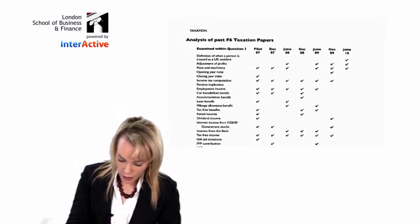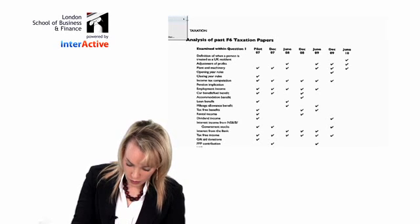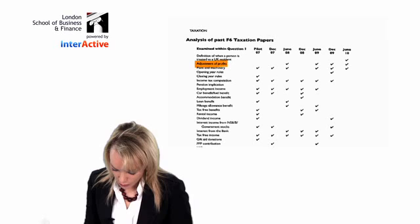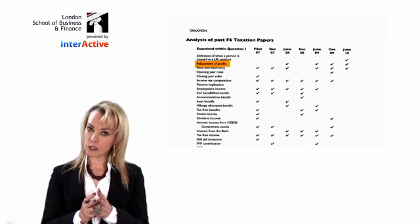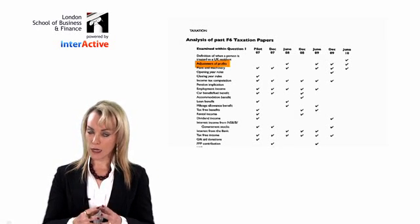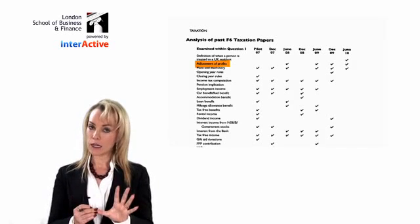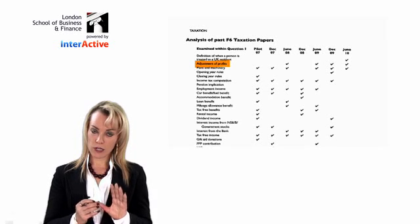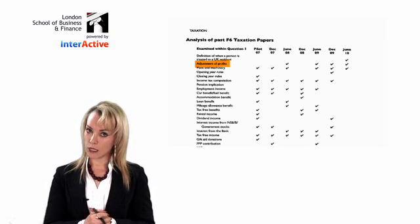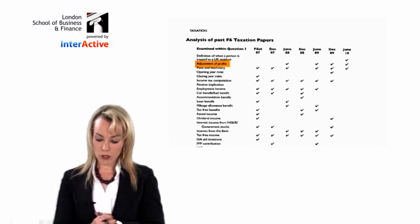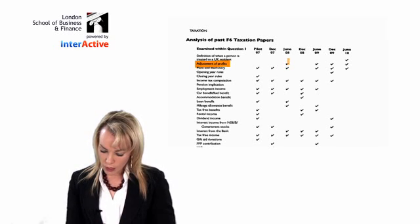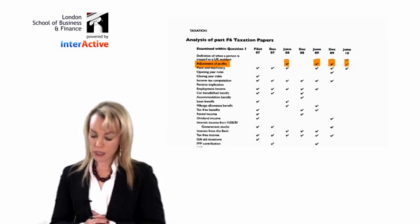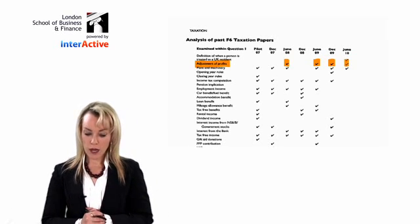A quite important topic here is the adjustment of profits — that's where you're running a business and you have trading income. Individuals pay income tax on their income, and there are five different types of income. Trading income belongs to someone who is self-employed. In question one, trading income and adjusting profits gets tested quite a lot — it appeared in June 08, June 09, December 09, and June 10.